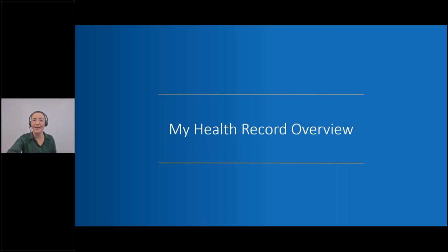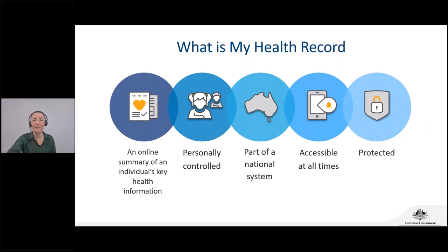My Health Record is an online summary of your health information. When you have a My Health Record, you can access it anywhere at any time. It's a national system, meaning your healthcare providers and any representatives can also access it — especially useful in an emergency. Your record may contain information about your immunisations, vaccinations, medicines, pathology, diagnostic imaging reports, test results, and hospital discharge summaries, all available in one place.